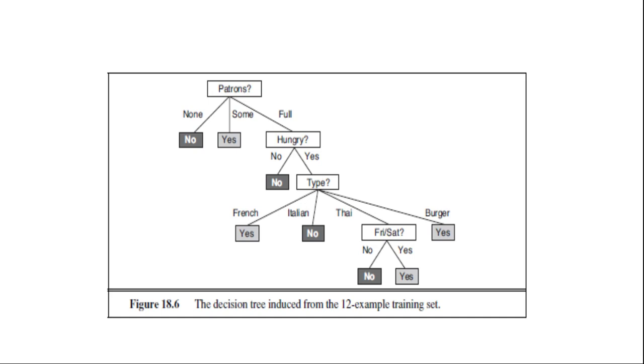The learning algorithm has no reason to include tests for raining and reservation because it can classify all the examples without them. It has also detected interesting and previously unsuspected patterns. The first author will wait for Thai food on weekends. It is also bound to make some mistakes for cases where it has seen no examples, for example, it has never seen a case where the wait is 0 to 10 minutes but the restaurant is full.